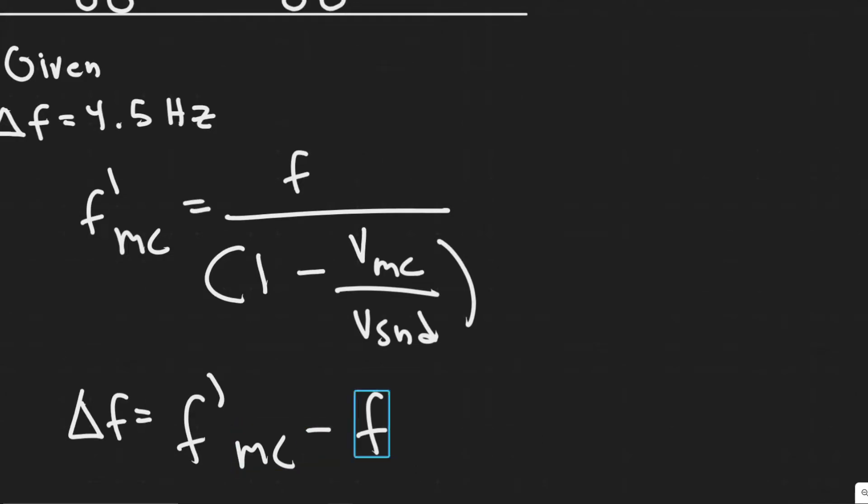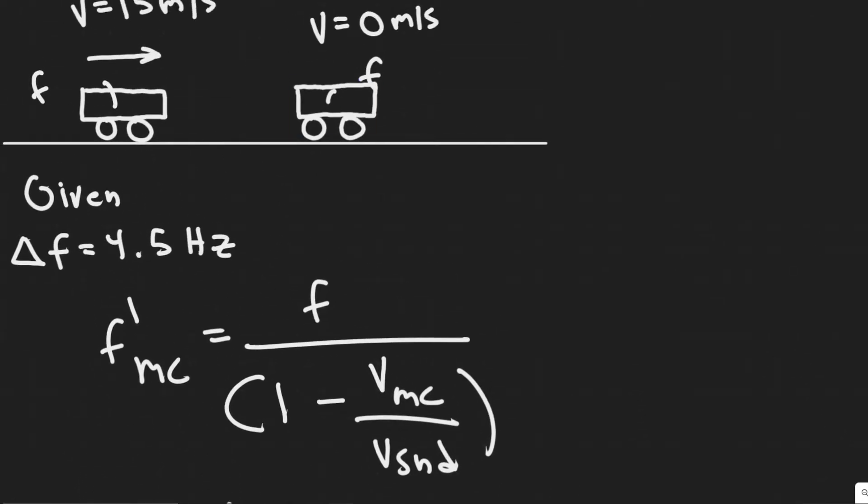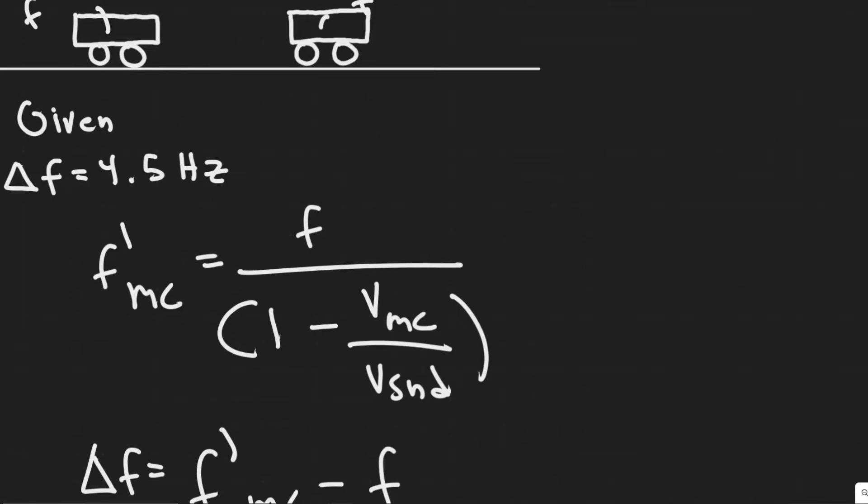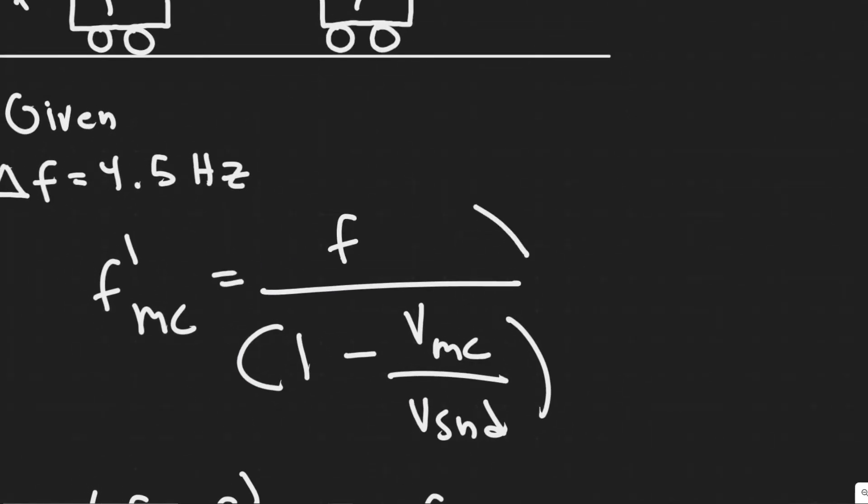So the change in the frequency or the beat frequency is equal to the frequency interpreted from the moving car, so this would be your moving car, and so this is the frequency interpreted of it by this car that's not moving minus what its actual frequency is, we'll call that value F. So we need to find what both of these are. Obviously we're going to solve for F.